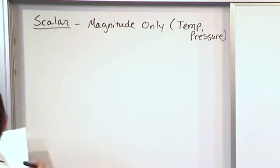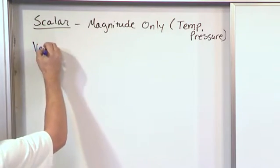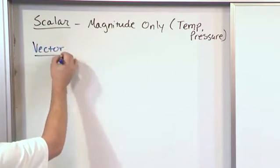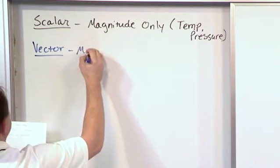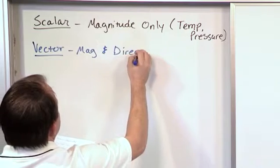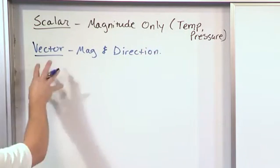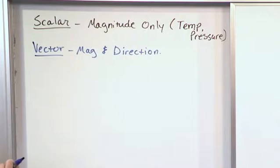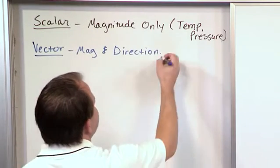Now, contrast that with the concept of a vector. A vector is a quantity that has magnitude and direction. So it's easy to tell a vector from a scalar because in a vector, we have clear indications of some kind of direction.